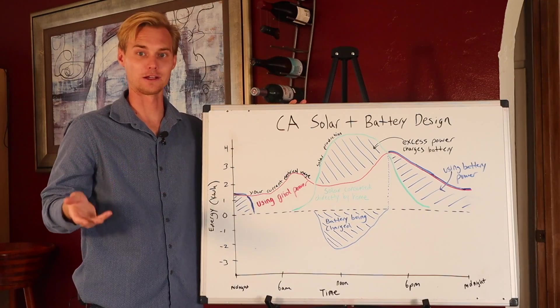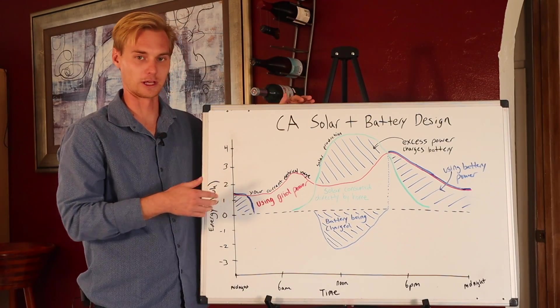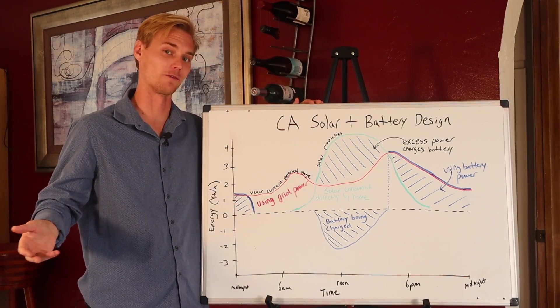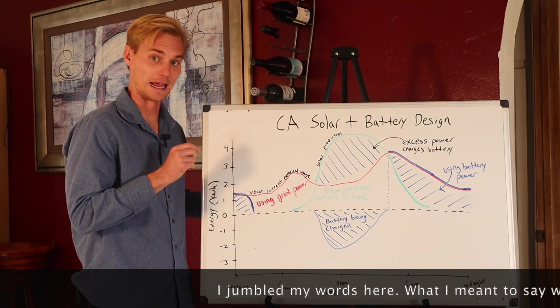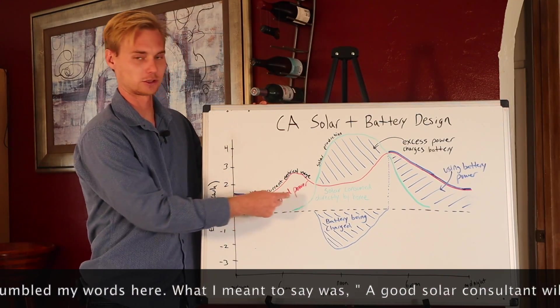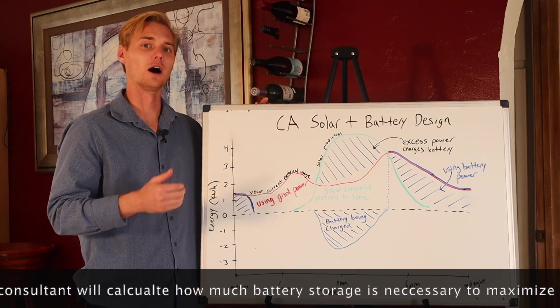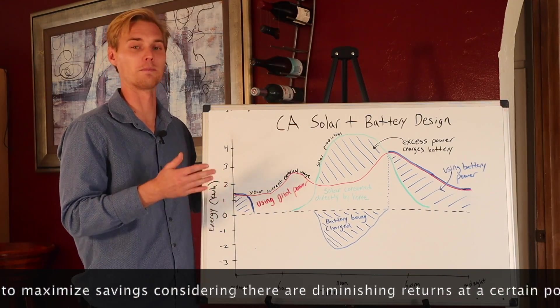So when designing the system, there's all these different softwares that can calculate that and they're all improving it drastically because this whole net metering 3.0 in California is brand new. But we're going to be figuring out and analyzing how much basically leftover power from the grid you need, combined with the cost of more batteries, of course, is going to give you the best ROI.